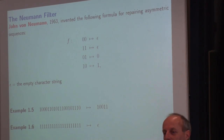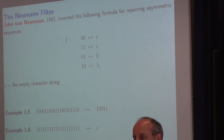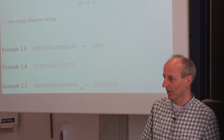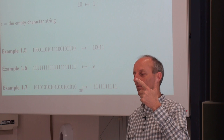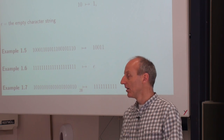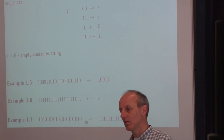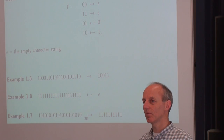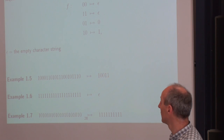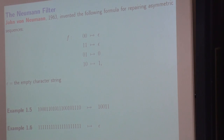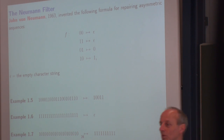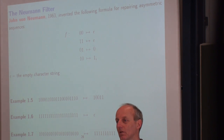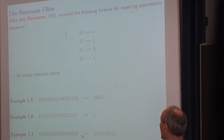This is one of the ingenious inventions of John von Neumann — you all know this name from the von Neumann computer architecture, which includes a processor, random-access memory, and a bus. But John von Neumann made so many inventions — for example, the von Neumann series in mathematics. And there is this von Neumann filter, which he invented in 1963. It is a method to correct bits which are asymmetric.